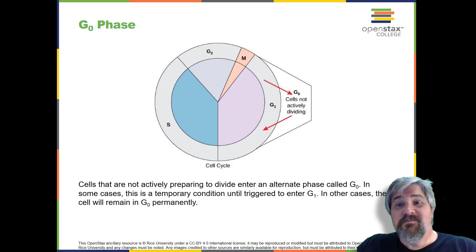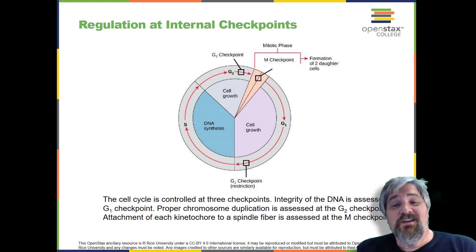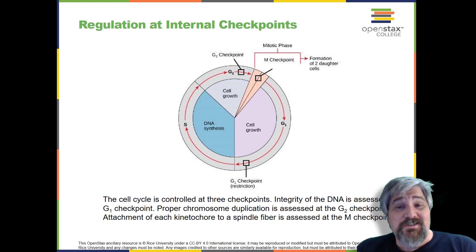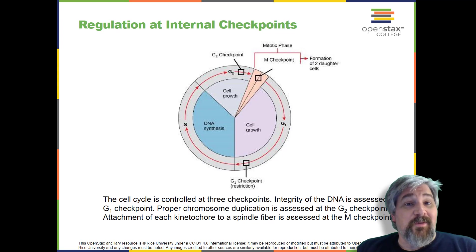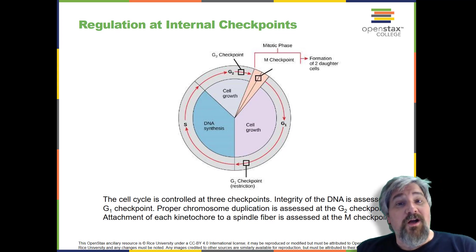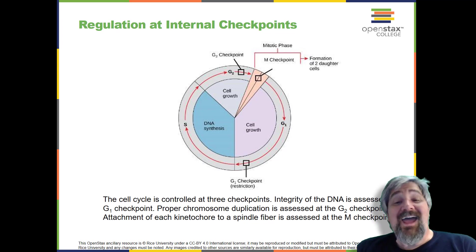Control of the cell cycle. The length of the cell cycle is highly variable even within the cells of an individual organism. In humans, the frequency of cell turnover ranges from a few hours in early embryonic development to an average of two to five days for epithelial cells, or to an entire human lifetime spent in G0 by specialized cells such as cortical neurons or cardiac muscle cells. There is also variation in the time that a cell spends in each phase of the cell cycle. When fast-dividing mammalian cells are grown in culture under optimal growing conditions, the length of the cycle is approximately 24 hours, with the G1 phase lasting approximately 11 hours. The timing of events in the cell cycle is controlled by mechanisms that are both internal and external to the cell.